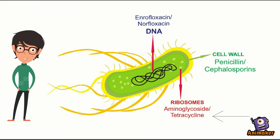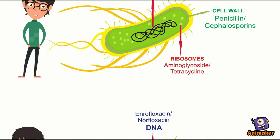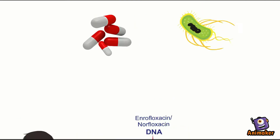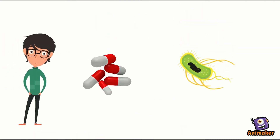Tetracycline, Spectinomycin, and most aminoglycosides inhibit protein synthesis. Quinolones like Enrofloxacin, Norfloxacin, and Pefloxacin inhibit the DNA gyrase enzyme. These various modes of action are essential to the effectiveness of an antibiotic to kill a bacterial cell.